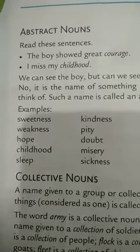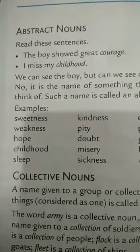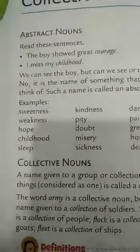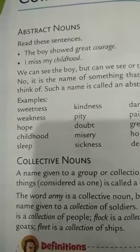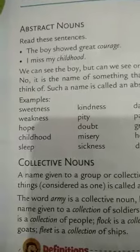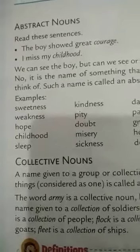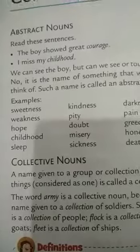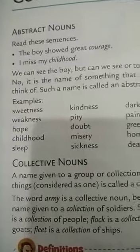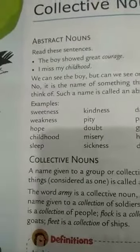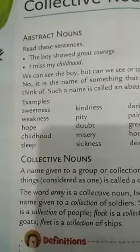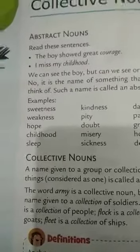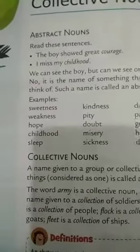See this. First we see some examples here. The boy showed great courage. I miss my childhood. You can't touch that. The words childhood and courage are a kind of feeling, a kind of emotion. We can't touch them — we just feel them. So these kinds of things are abstract nouns.